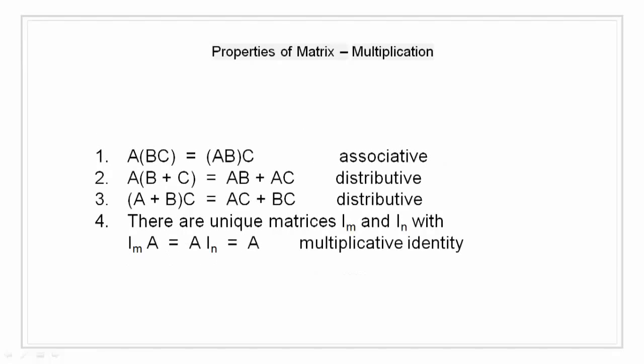Properties of multiplication. Multiplication is associative, that is A into BC is equal to AB into C. Multiplication is also distributive, that is A times B plus C is equal to AB plus AC. And A plus B times C is equal to AC plus BC. Multiplication has a multiplicative identity, means there exists unique matrices I of M and I of N. With I of M times A is equal to A of I N is equal to A. Basically, I times A is equal to A times I is equal to A.